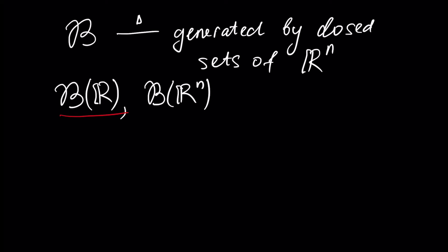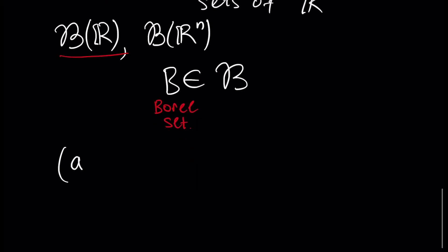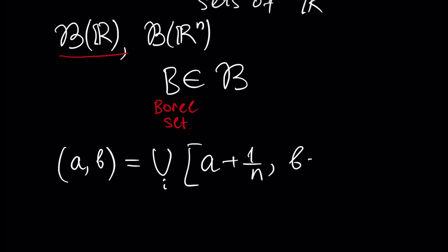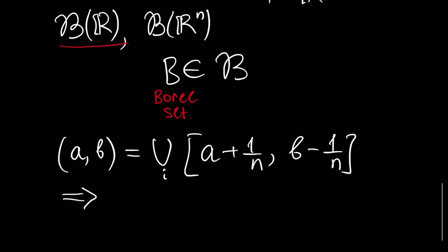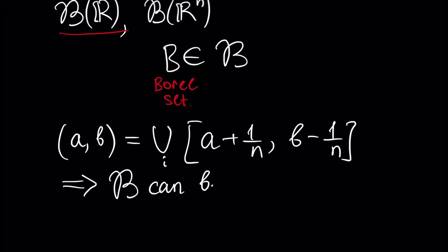By definition, this is the sigma algebra generated by closed sets, and this is the minimal sigma algebra generated by this set. Any sigma algebra that contains closed sets in ℝⁿ also contains our Borel sigma algebra. Any set B inside our Borel sigma algebra is called a Borel set. Since any interval (a, b) can be generated by segments, we can write the interval as a union of such segments, which means the Borel sigma algebra can also be generated by open sets.